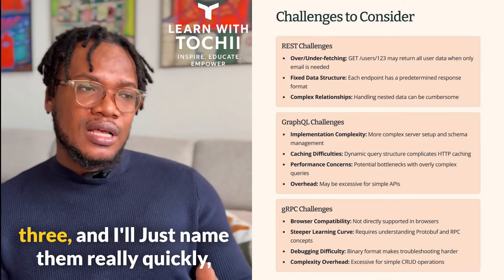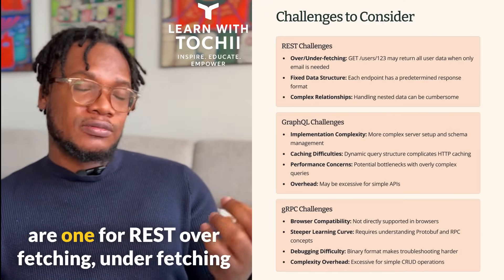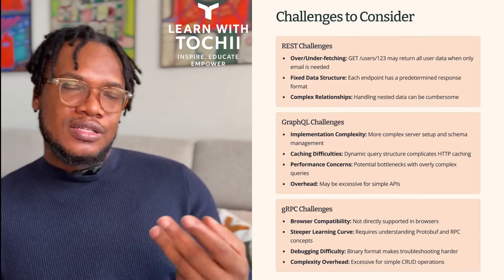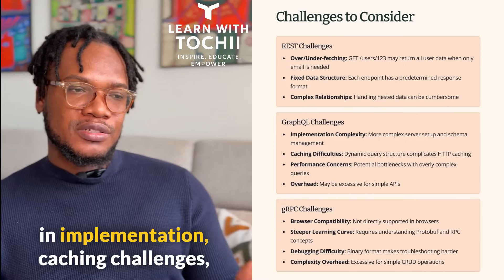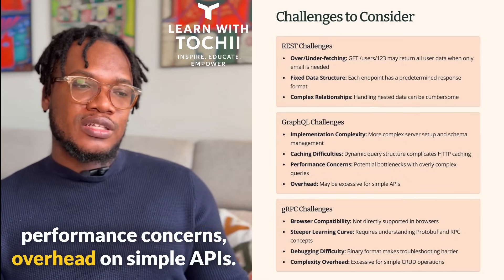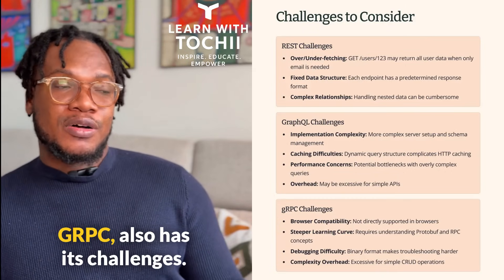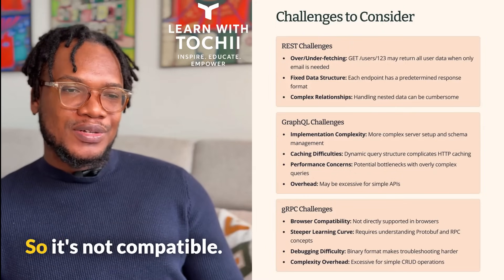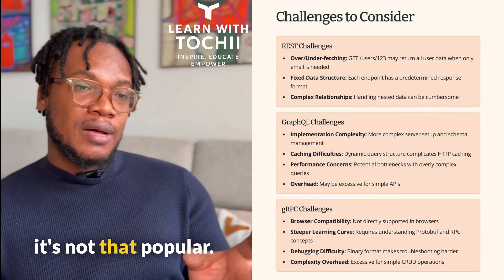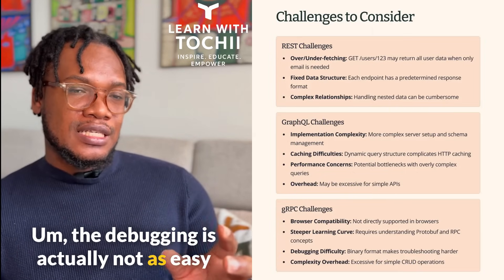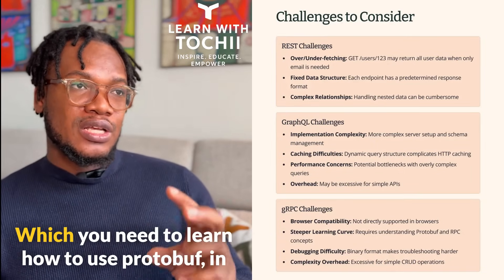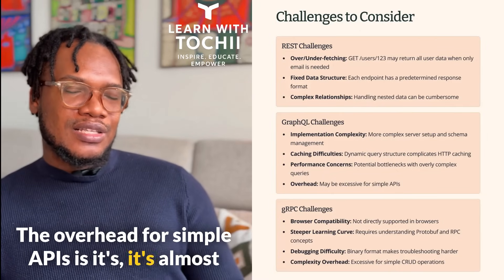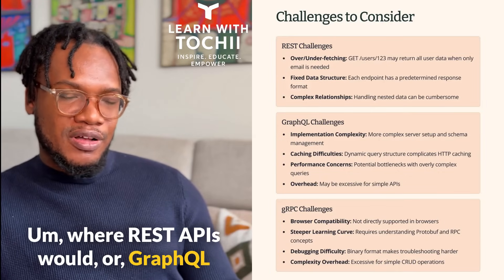Some of the challenges involving these three: for REST — overfetching, underfetching, fixed data structure, and limited support for complex relationships. GraphQL also has challenges: complexity in implementation, caching challenges, performance concerns, and overhead on simple APIs. gRPC also has its challenges — it's not really browser compatible with most of what you have on the browser today. It has a steeper learning curve, which is why it's not that popular. Debugging is not as easy because it doesn't use JSON — it uses Protobuf, which you need to learn in order to debug. And the overhead for simple APIs is almost overkill, where REST or GraphQL would really suffice.